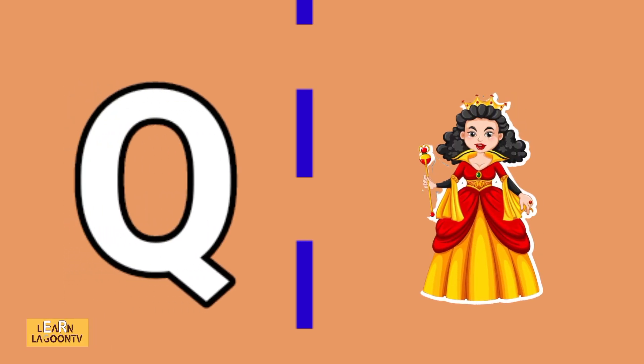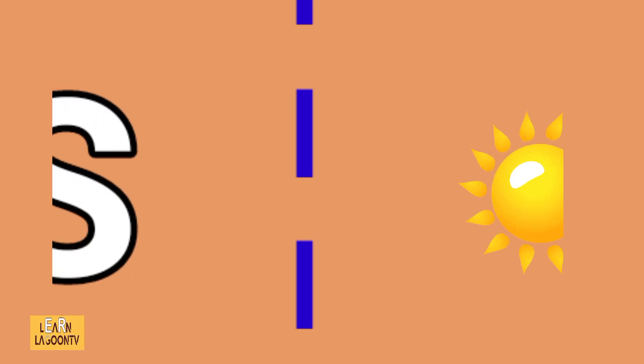Q is for queen, R is for rabbit, S is for sun.